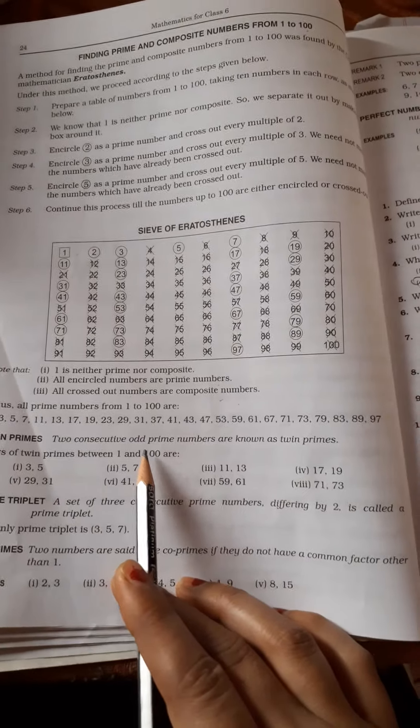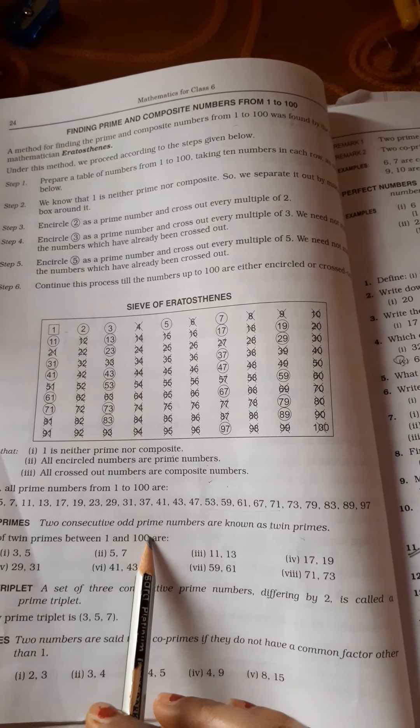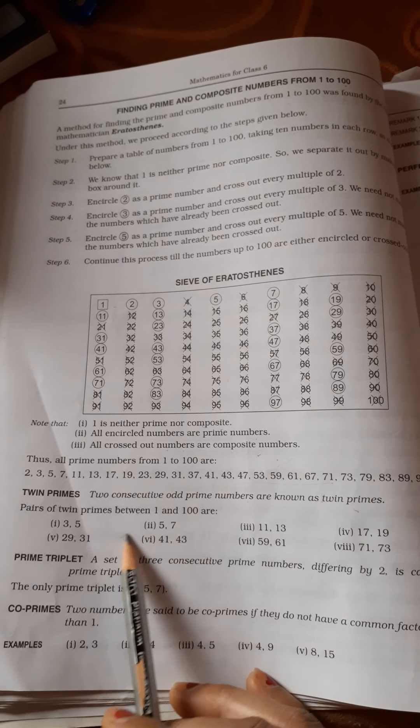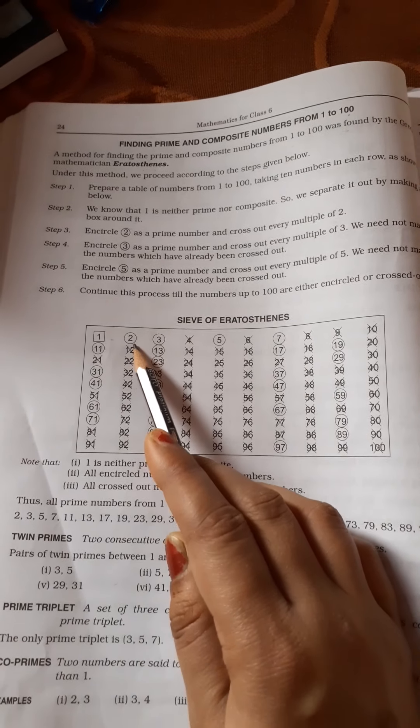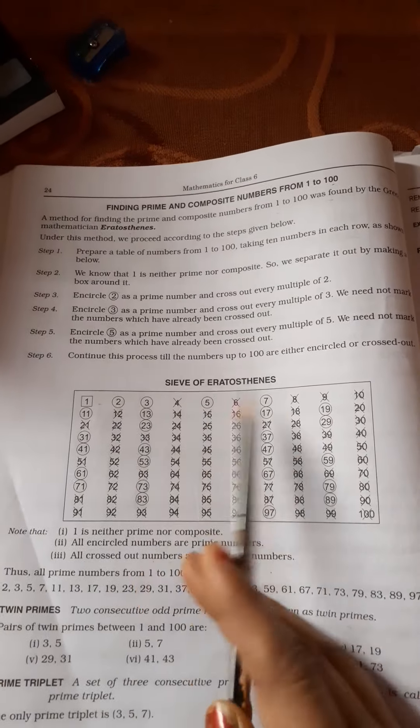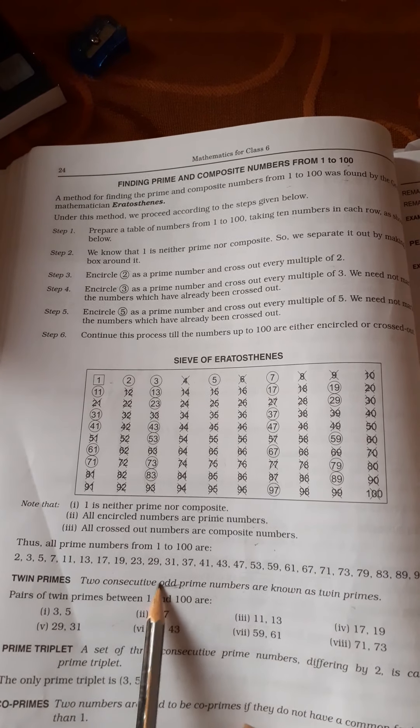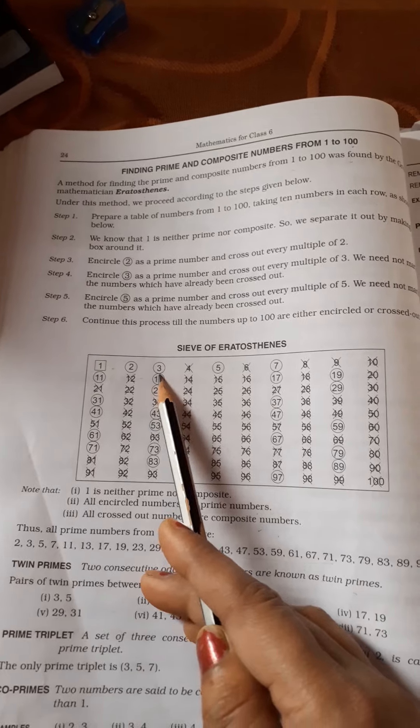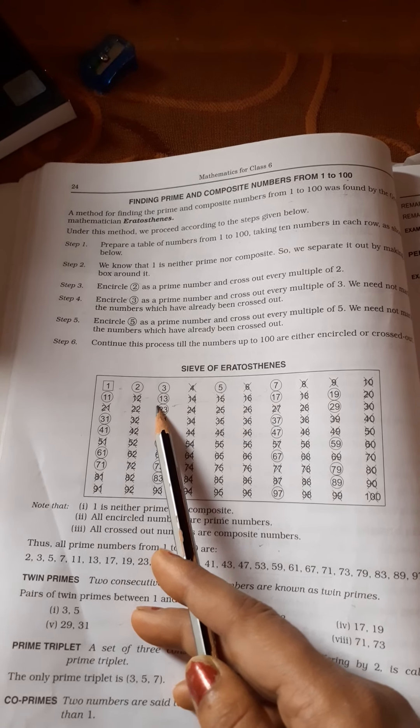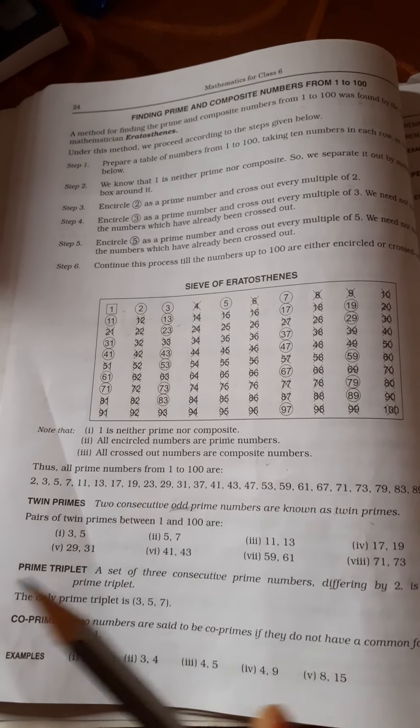Twin primes: two consecutive odd prime numbers are known as twin primes. Two consecutive means one after another odd prime numbers. For example, pairs of twin primes between 1 to 100 - look at your table, the circled ones are prime numbers. So see which ones come one after another. We're told odd prime numbers, so we haven't taken 2 here because it is even. Three, five. Five, seven. Eleven, thirteen. This way we have taken them: seventeen, nineteen, twenty-nine, thirty-one. These are twin primes, one after another.